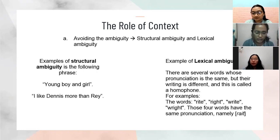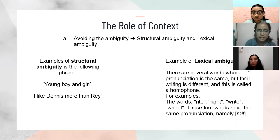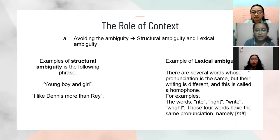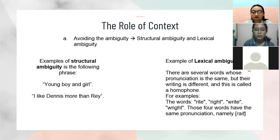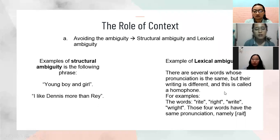The next one is lexical ambiguity, which can be seen in the following example. There are several words whose pronunciation is the same but whose writing is different — usually called homophones. For example, the words 'write,' 'right,' 'rite,' 'wright,' and 'right' — these words are spelled differently but their pronunciation is the same. When mentioning such a word, the appropriate context must be followed by appropriate words, phrases, or sentences either before or after the homophone word.